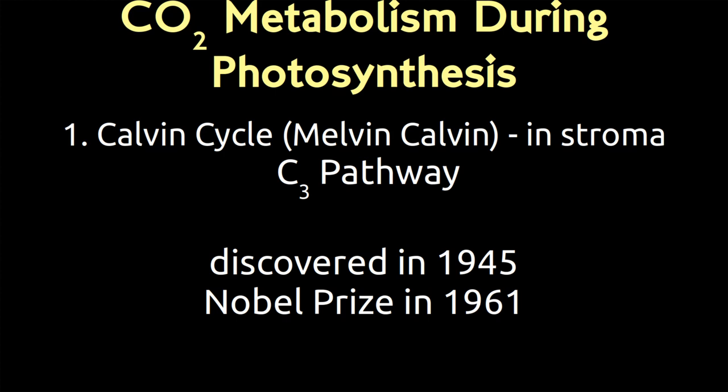It is the Calvin cycle, where we actually take and integrate CO2 into organic molecules. This is named for the guy who first characterized it, Melvin Calvin. And this is going to happen in the stroma of the chloroplast as what's known as the C3 pathway.